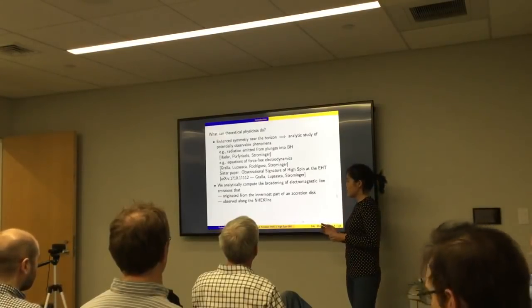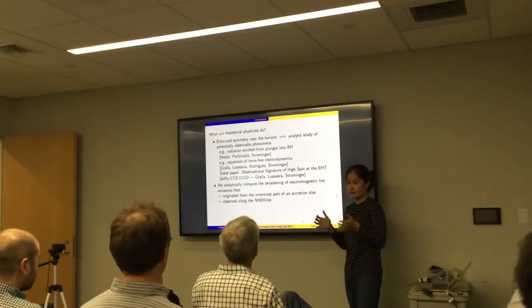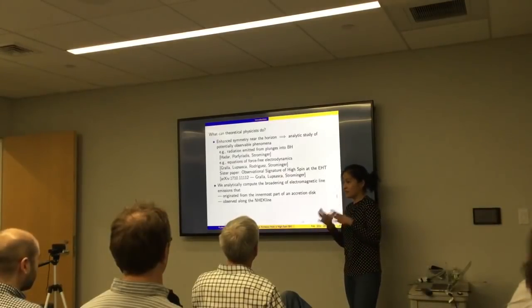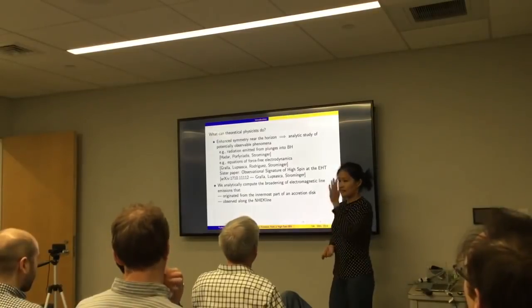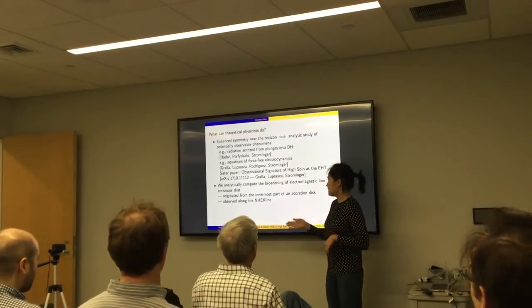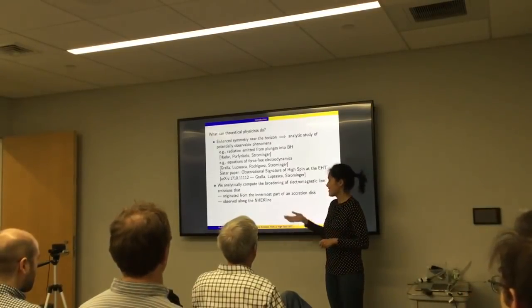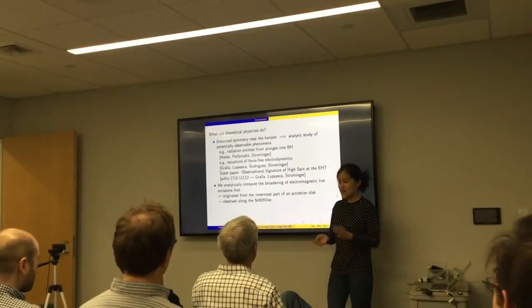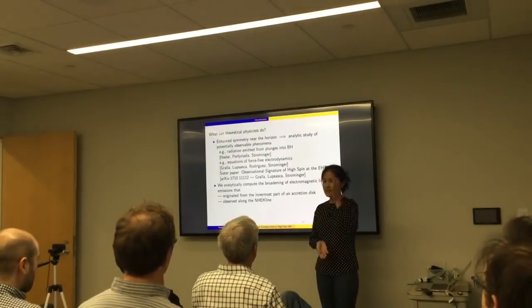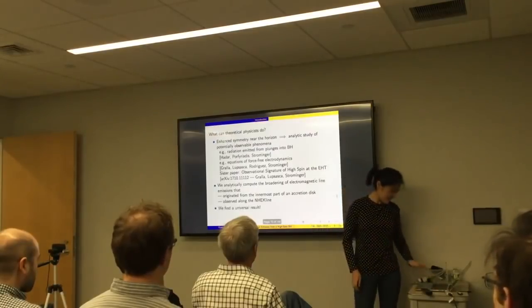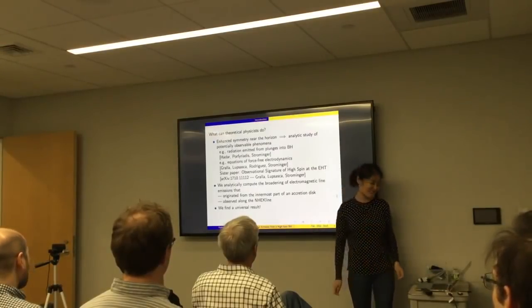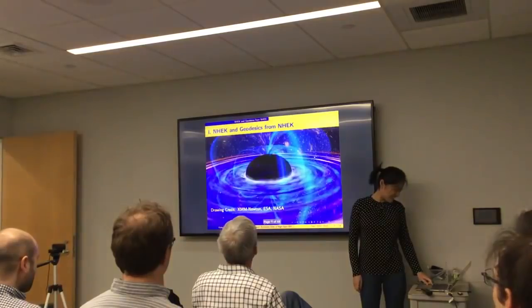What we do is we analytically compute the broadening of electromagnetic line emission, which originates from the innermost part of an accretion disk that resides in the near-horizon region and is observed along the neckline. You might not be familiar with the terminology, but I'll show you a picture of the neckline later. Basically, it is a vertical line segment that's on the observer's screen. And what we find is a universal result.